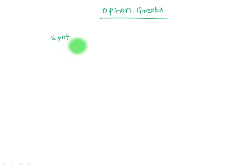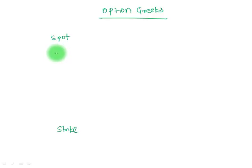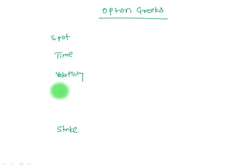The first variable is spot price — if my spot price changes, that would have an impact on the option price. Then if strike price changes, that would have an impact on the option price. If time to maturity changes, that will have an impact. If volatility changes, that would have an impact. And if the risk-free rate of return changes, that would also have an impact on the option price.